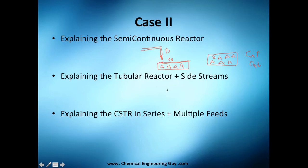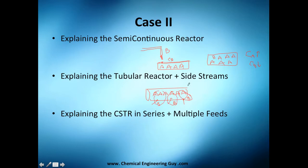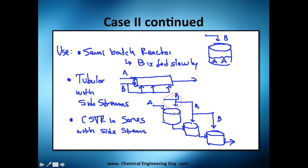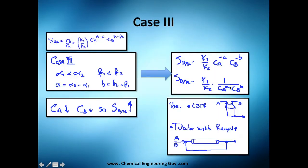With the side stream PFR arrangement, you have a high concentration of A flowing throughout the system, and you inject small amounts of B at multiple points — so everywhere along the reactor, B is at low concentration. The final CSTR in series configuration is essentially equivalent: it models a PFR and is analogous to a continuous semi-batch reactor where you keep adding B to a vessel already rich in A.